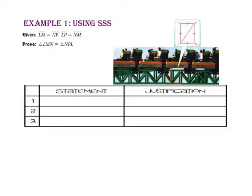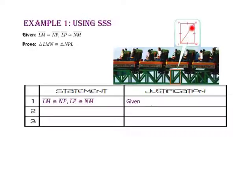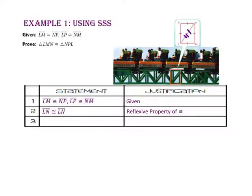In example one, we will use the side-side-side postulate. We want to prove that triangle LMN is congruent to triangle NPL. From the given information, side LM is congruent to side NP and side LP is congruent to side NM. We also know that side LN is in both triangles, so side LN is congruent to itself by the reflexive property of congruence. Since three sides of one triangle are congruent to three corresponding sides of the other, triangle LMN is congruent to triangle NPL by the side-side-side postulate.